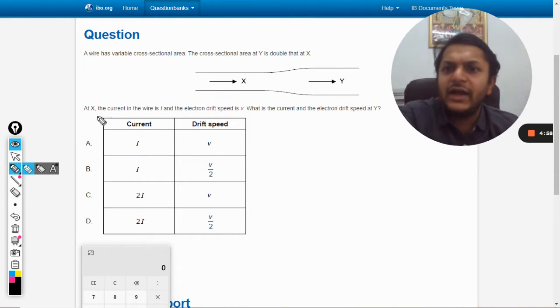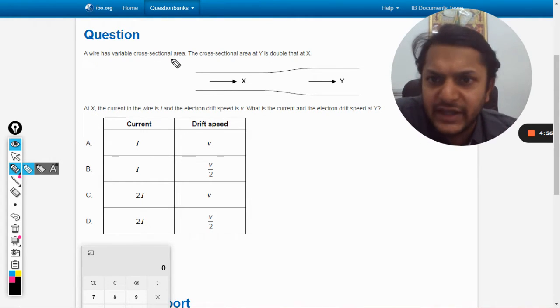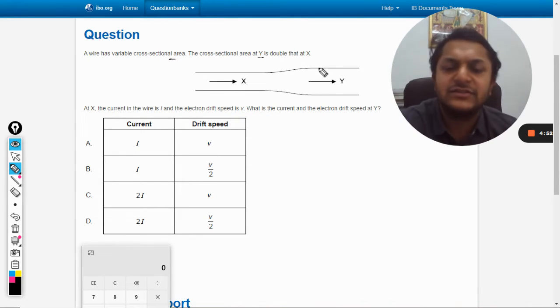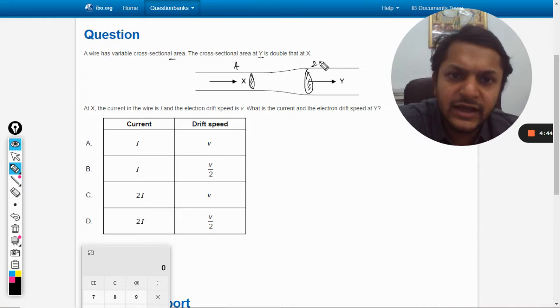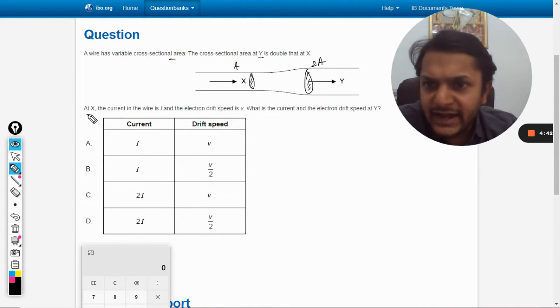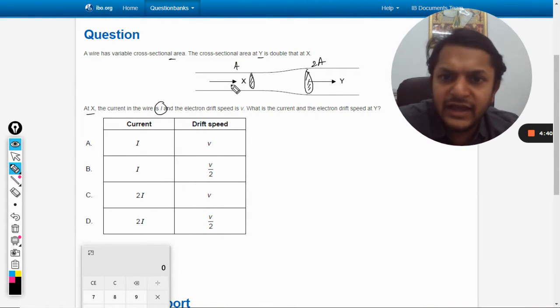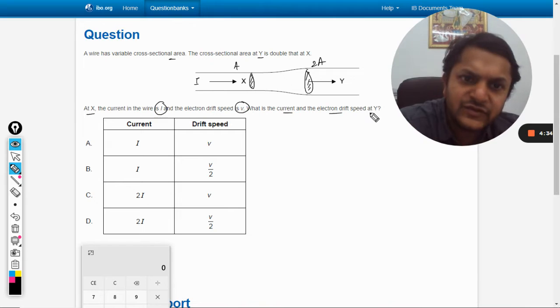A wire has a variable cross-sectional area. The cross-sectional area at y is double that of x, so the area is now double. Here the area is a, and here the area is 2a. At x, the current in the wire is i and drift speed is v. What is the current and the drift speed at y?